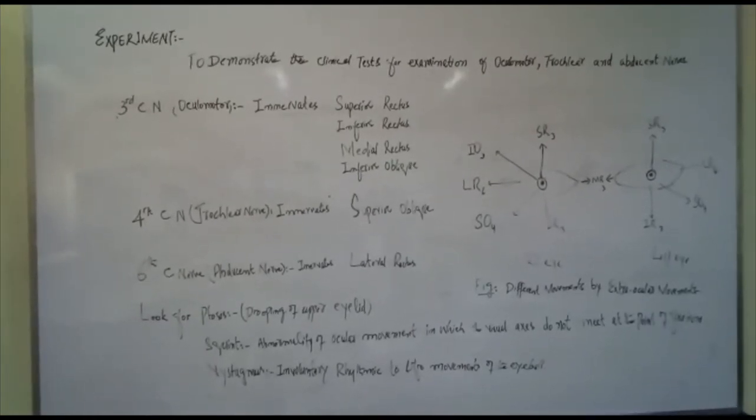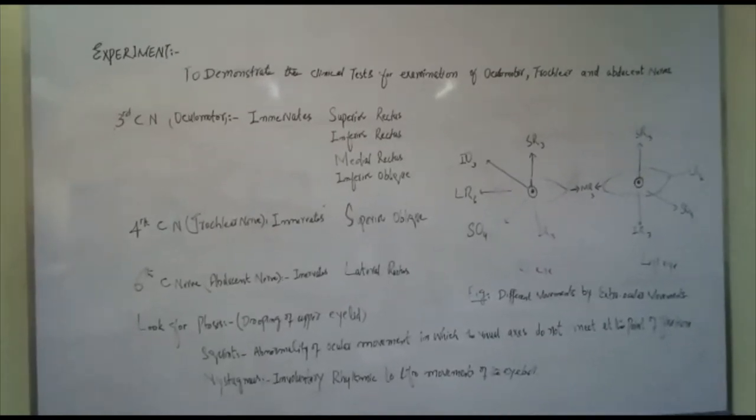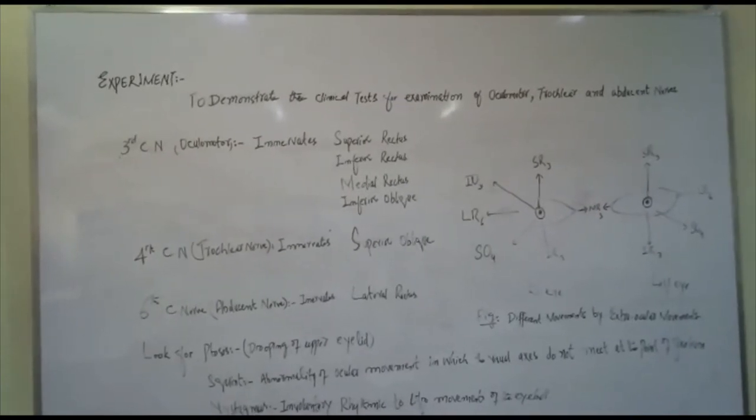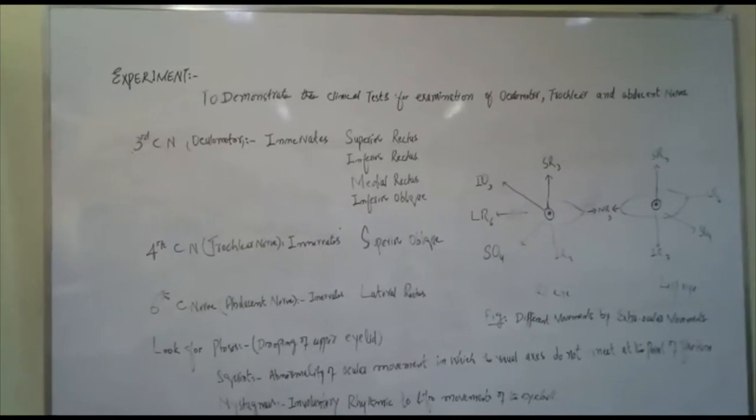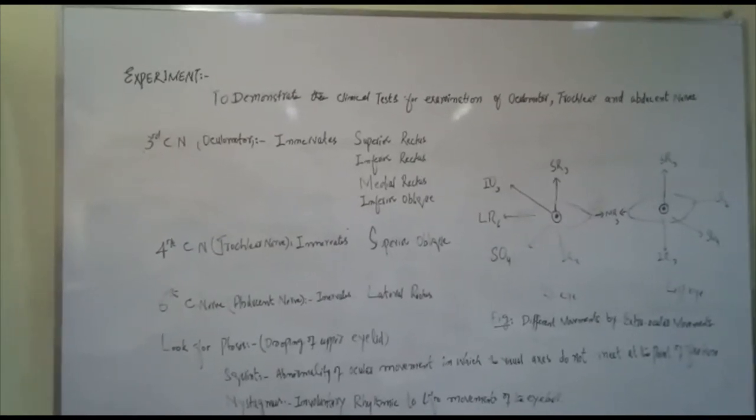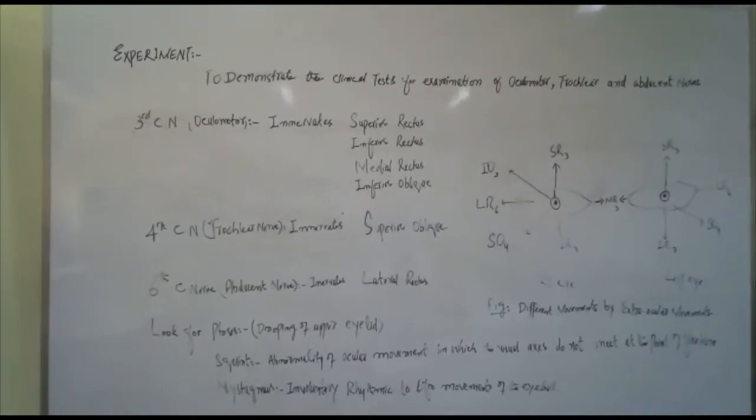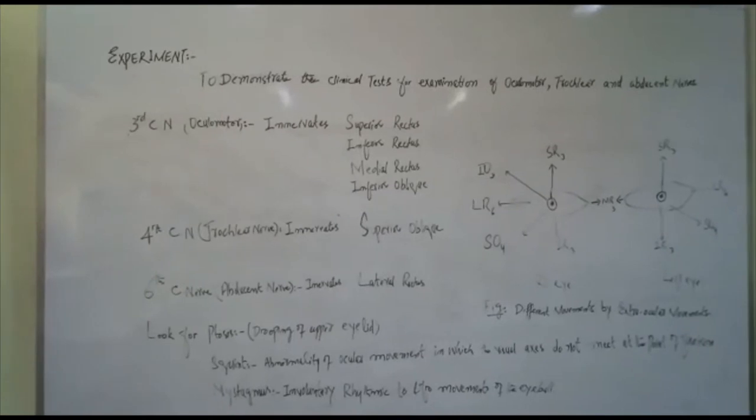And in the diagram you can see at the top SR3, superior rectus, which is supplied by 3rd cranial nerve. Inferior oblique also by 3rd cranial nerve. Inferior rectus also by 3rd cranial nerve. And LR6 lateral rectus by abducent 6th cranial nerve. SO4, superior oblique.